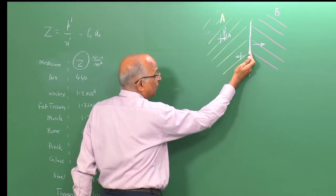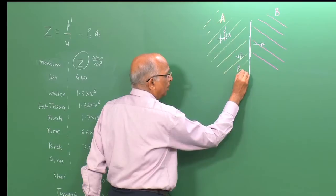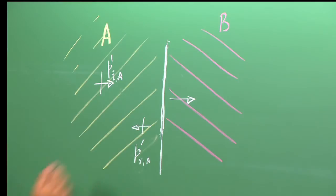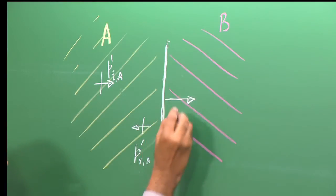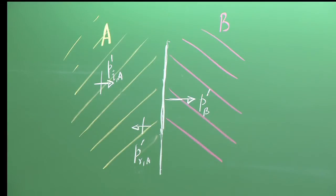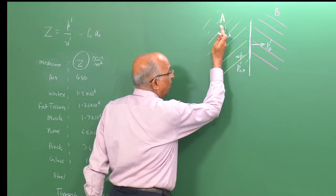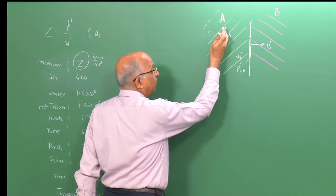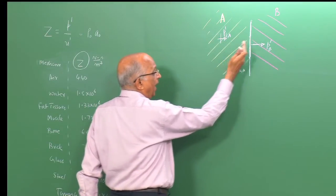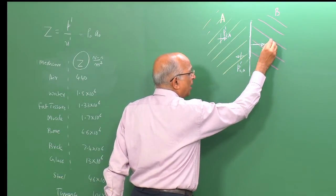An over-pressure p_ia prime travels toward the interface. What gets reflected is p_r in medium A, and what gets transmitted into medium B is p_b prime. So in medium A, a wave of over-pressure p_ia comes in, gets reflected, and in medium B something gets transmitted.